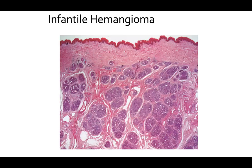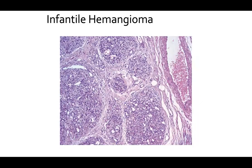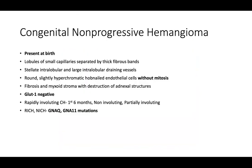At low power you see tightly packed clusters of endothelial cells in the growth phase, looking very similar to a lobular capillary hemangioma. Congenital non-progressive hemangiomas are present at birth and considered more of a vascular malformation — thus they are GLUT1 negative. You'll find lobules of small capillaries separated by thick fibrous bands, stellate intralobular and large intralobular draining vessels, round slightly hyperchromatic hobnailed endothelial cells without mitosis, and fibrosis and myxoid stroma with destruction of adnexal structures.